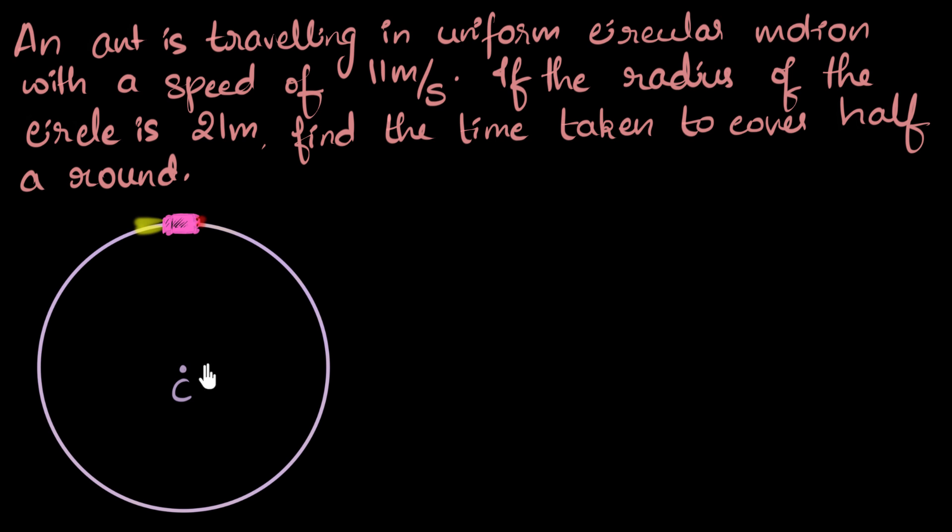I'm going to use the same drawing as before. So let's imagine now this is our ant. It's given that the radius of the circle is 21 meters. So this radius becomes 21 meters. And we are given the speed. The speed of that ant is 11 meters per second. And we are asked to calculate the time taken. How much time it takes to cover half a round. That means you should only think about half a round. So let's say from here all the way till here. Only from here to here.